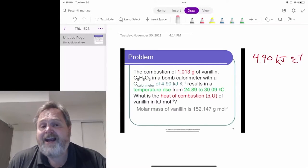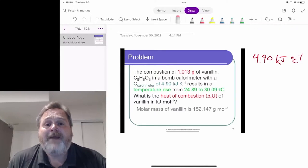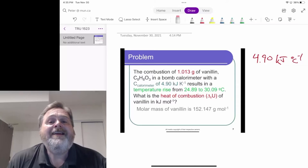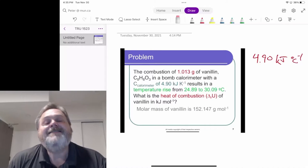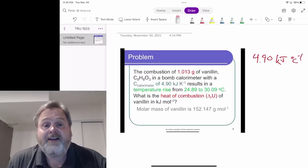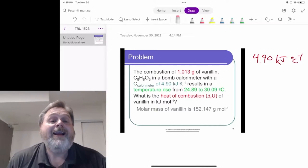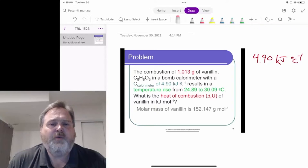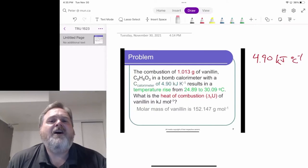Now, this is the temperature change of the calorimeter. We want to take all this information and figure out the heat of combustion for vanillin. So what does it take when vanillin reacts with oxygen to produce carbon dioxide and water? How much heat is that going to release? And we know it's going to be a release of things because when we burn stuff, it gives off heat.